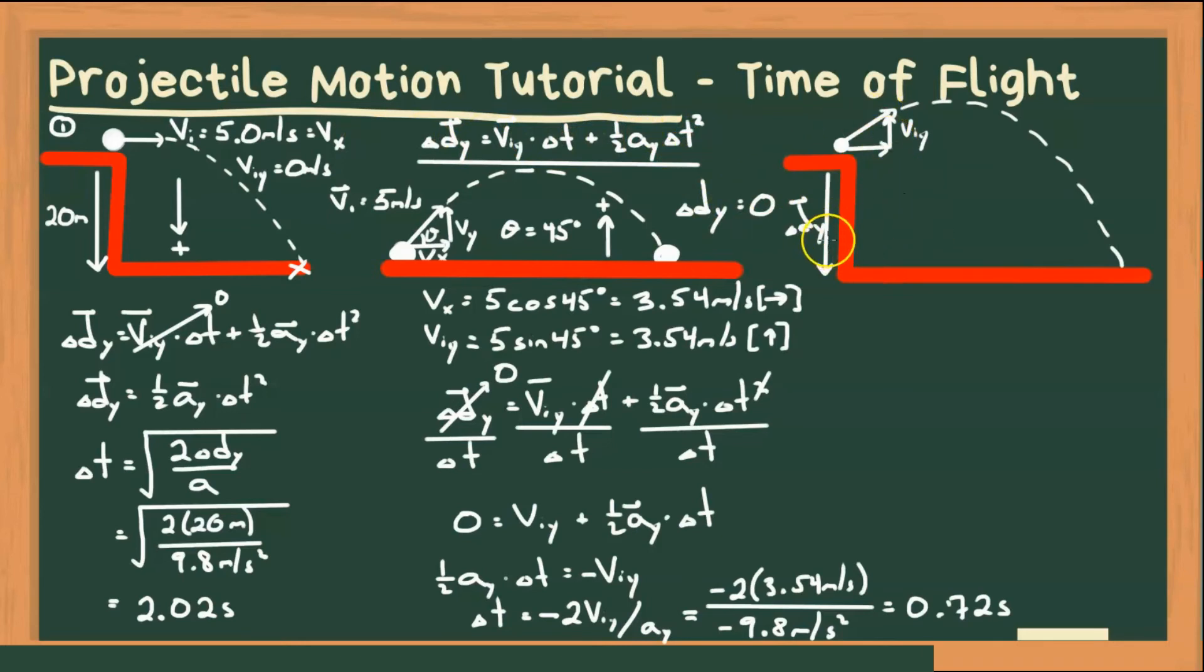So let's use all the same values, right? For delta dy, we'll use 20 meters, like in case 1. And our initial velocity, we'll use 5 meters, like we have in both cases. The angle, again, we'll use the same as 45 degrees. So let's plug in our equations. We have delta dy is equal to viy times time plus 1 half ay times time squared.